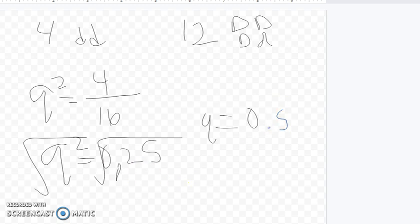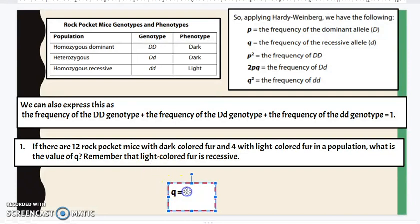50% of the population, I'm sorry, of the gene pool is the recessive allele. So here our answer would be 0.5.